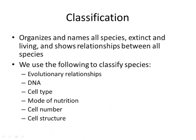We classify and name organisms — both extinct and living — to show the relationships between all species. We can use evolutionary relationships, how closely related they are, their DNA, cell type (whether prokaryotes or eukaryotes), mode of nutrition (autotrophs or heterotrophs, photosynthesis or chemosynthesis), cell number (unicellular or multicellular), and cell structures such as chloroplasts or cell walls.